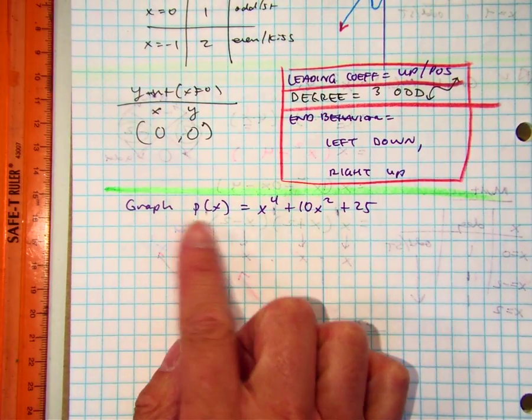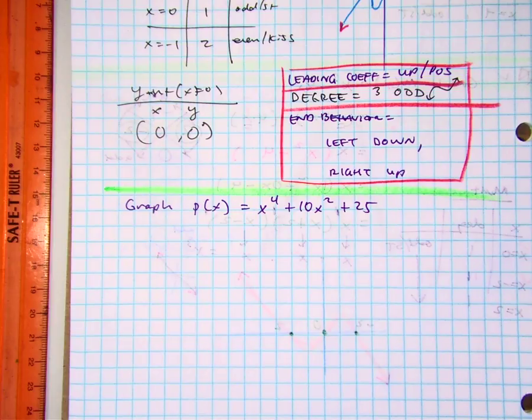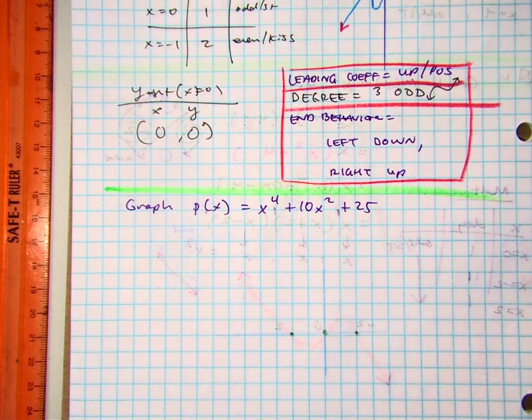So before I graph a polynomial, I recognize that class, is this factored? No. So I want to teach you guys some hints as these numbers start getting bigger, which they will.